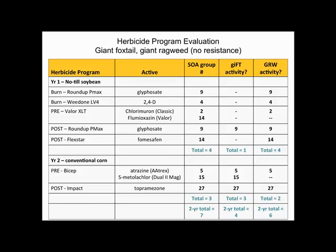Adding Flexstar to the post-soybean program, especially as glyphosate resistance concerns arise: Flexstar doesn't have any foxtail activity, so compared to just adding Impact, we're still at a total of four over two years for foxtail. But Flexstar does have activity on giant ragweed — now in the bean year we have four different sites of action on giant ragweed, two in the corn year, for a two-year total of six for giant ragweed.